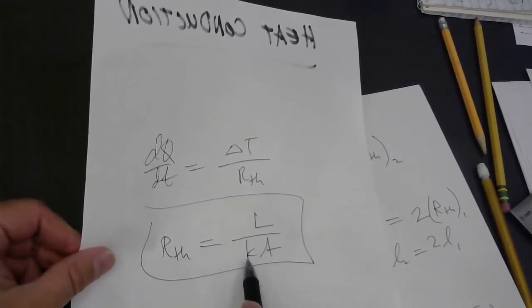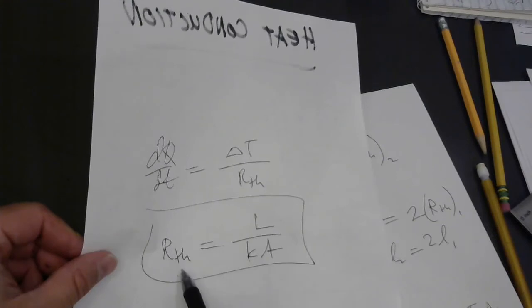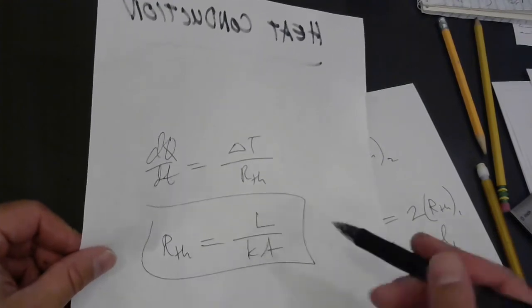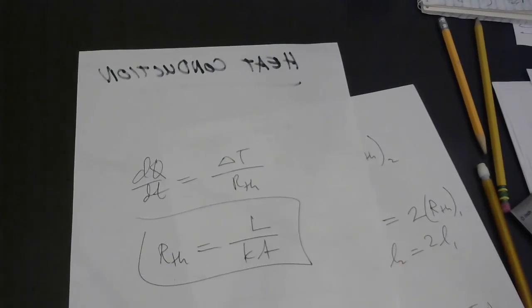the higher the conductivity, this is a thermal conductivity. It's in the denominator. So the higher the conductivity, the lower the thermal resistance would be. And of course, the more area you're talking about, the less thermal resistance.